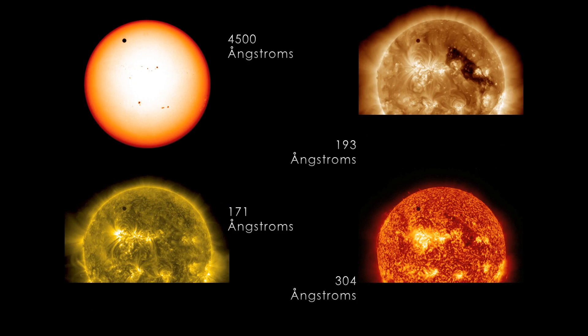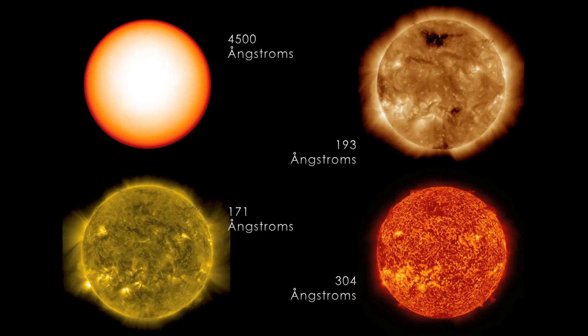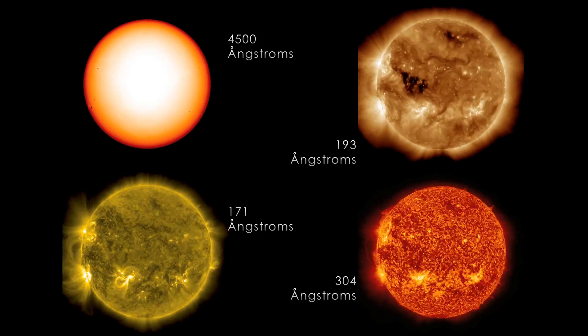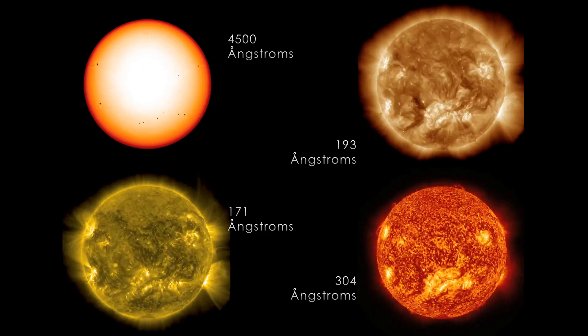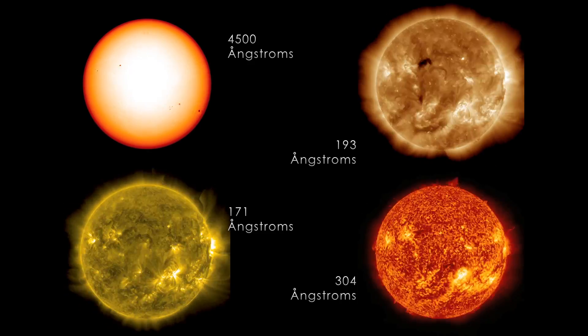Did you see that little tiny black dot that's close to the North Pole of the Sun? That's Venus. Every hundred years or so, it moves in front of the Sun, giving us this rare and amazing astronomical event.